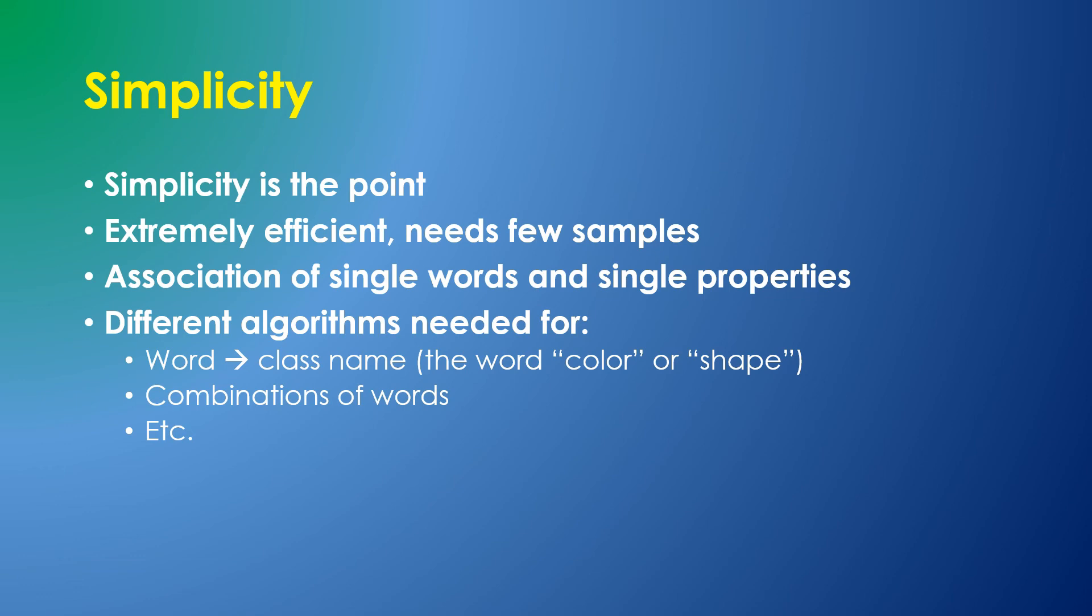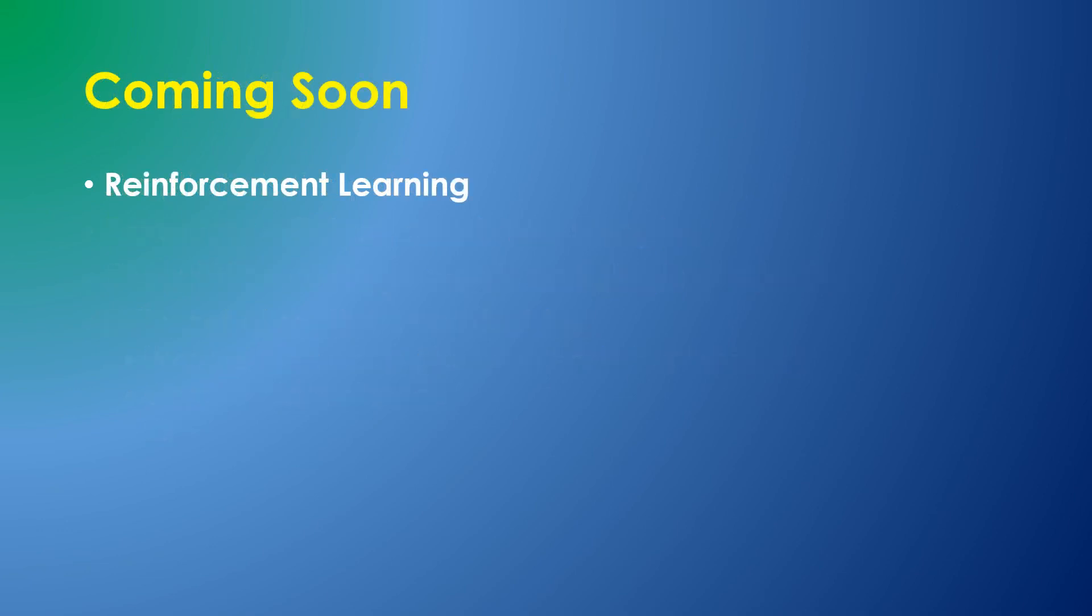This algorithm can associate individual words with individual property values. A similar algorithm using the knowledge store's parent-child structure could associate words with class names, like the word 'color' referring to any color, associations with multiple words, etc. There will be many additional simple algorithms. I'll explain them as I implement them.